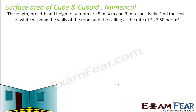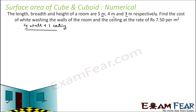A similar question — the length, breadth, and height of the rooms are given, all in meters. We need to find the cost of whitewashing the walls of the room and the ceiling. So we have to whitewash four walls plus one ceiling, meaning we are looking for five sides. The rate is given, so first we have to find the surface area.